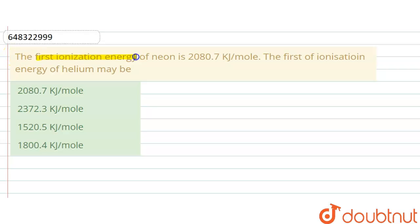The first ionization energy of neon is 2080.7 kilojoule per mole. The first ionization energy of helium may be? Here the options are: 2080.7 kJ/mol, 2372.3 kJ/mol, 1520.5 kJ/mol, and 1800.4 kJ/mol.